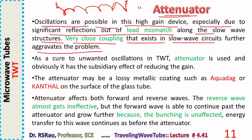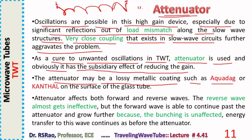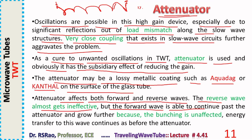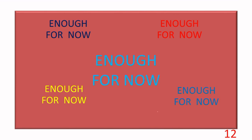The attenuator reduces gain as a subsidiary effect but eliminates unwanted oscillations. To recap, this session covered historical background, structural features, and the amplification mechanism of traveling wave tubes. Thank you for joining this session.